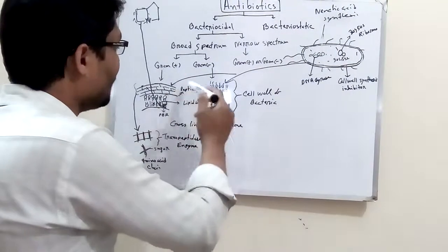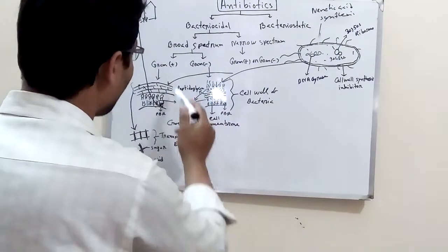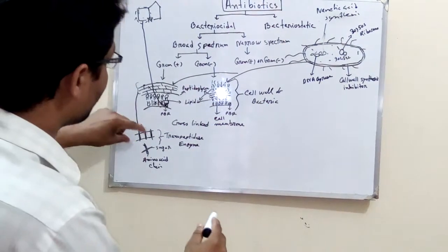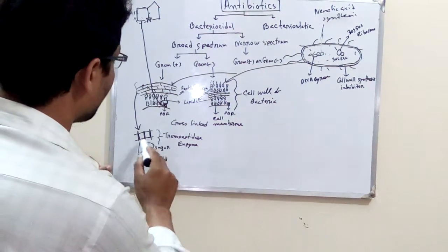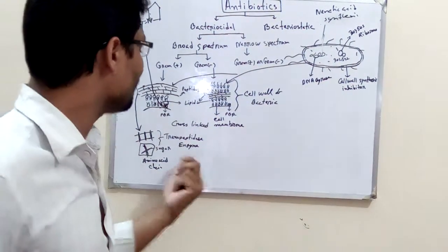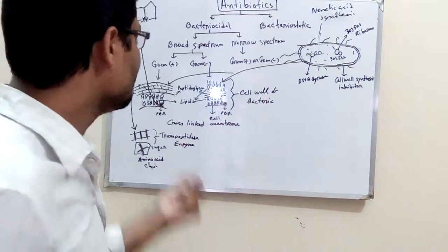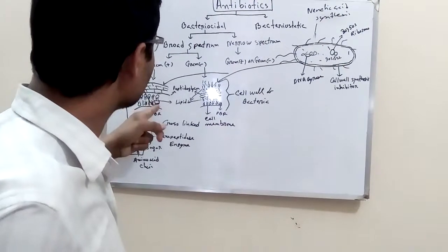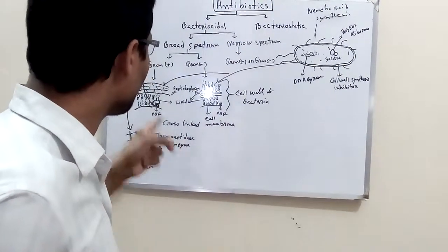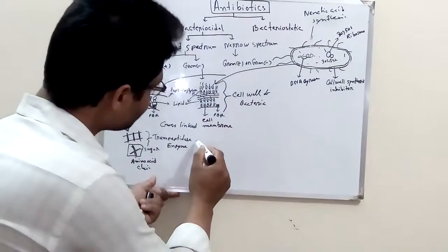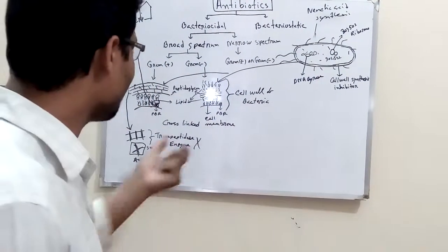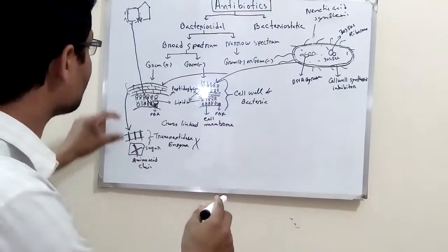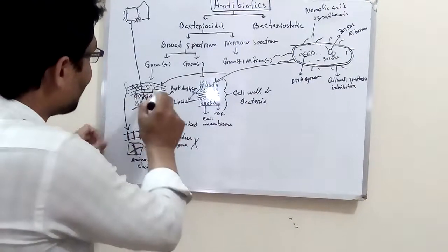Peptidoglycan synthesis involves the transpeptidase enzyme, which forms cross-links in the cell wall. Beta-lactam antibiotics block this transpeptidase enzyme, inhibiting the cross-linking process. When the transpeptidase enzyme is inhibited, the cross-link formation is blocked, ultimately preventing proper bacterial cell wall synthesis.